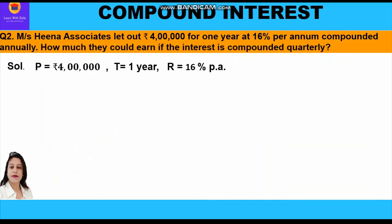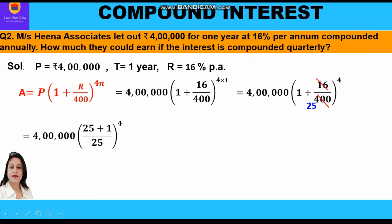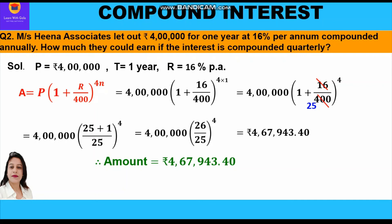Let us start the solution. Principal is rupees 4 lakh, time period is one year, rate is 16 percent per annum. Applying the amount formula: A = P × (1 + r/400)^(4n) = 4 lakh × (1 + 16/400)^(4×1) = 4 lakh × (1 + 16/400)^4. Simplifying, 400 ÷ 16 gives 25 in the denominator. Taking LCM: 4 lakh × (25 + 1)/25 whole raised to power 4 = 4 lakh × (26/25)^4.